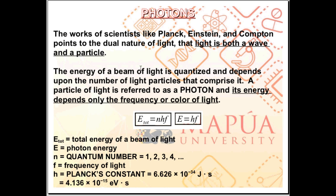The total energy of the beam of light is equal to the sum of the energy of these so-called light particles. A particle of light is referred to as a photon, and its energy depends only on the frequency or color of light. The total energy of the beam E total is equal to N, H, F, where N, called the quantum number, is equal to 1, 2, 3, 4, 5, and so on.